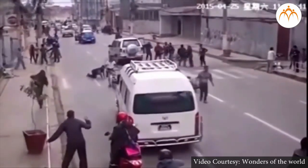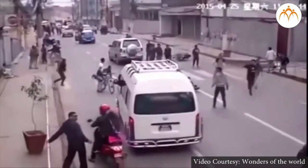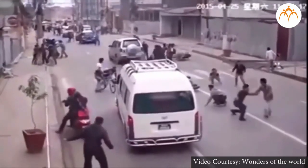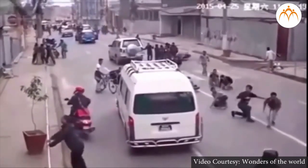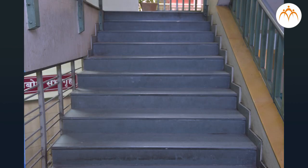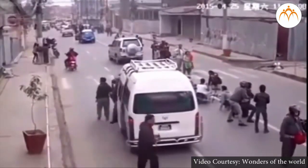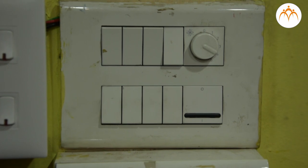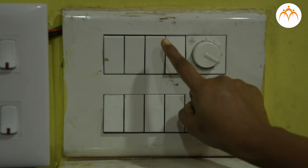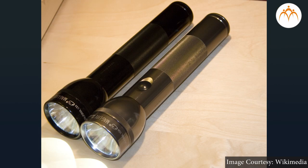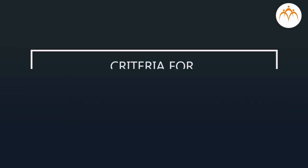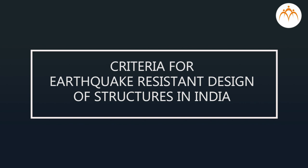If an earthquake occurs when you are driving a car, stop driving and stay in the car, away from electricity lines, buildings, and trees. Do not use an elevator during an earthquake — use a staircase to go to the ground floor. Do not stay long at the same place. Earthquakes can cause fires, so switch off the mains in your house or building. Use torches, candles, or lanterns at such times.